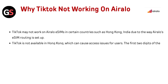The first two digits of the ICCID number on Airalo's eSIM are 8952, which corresponds to the country code for Hong Kong. This suggests that any geo-restrictions on apps or content for Hong Kong likely apply to Airalo eSIMs as well.